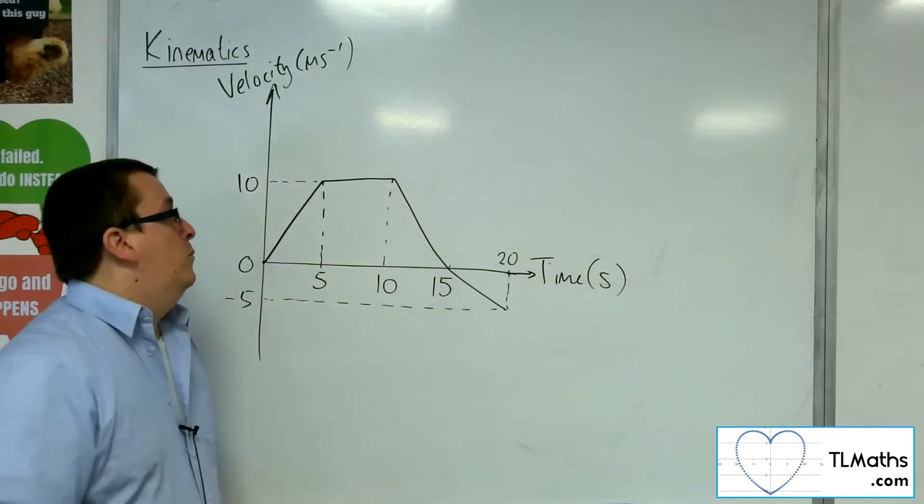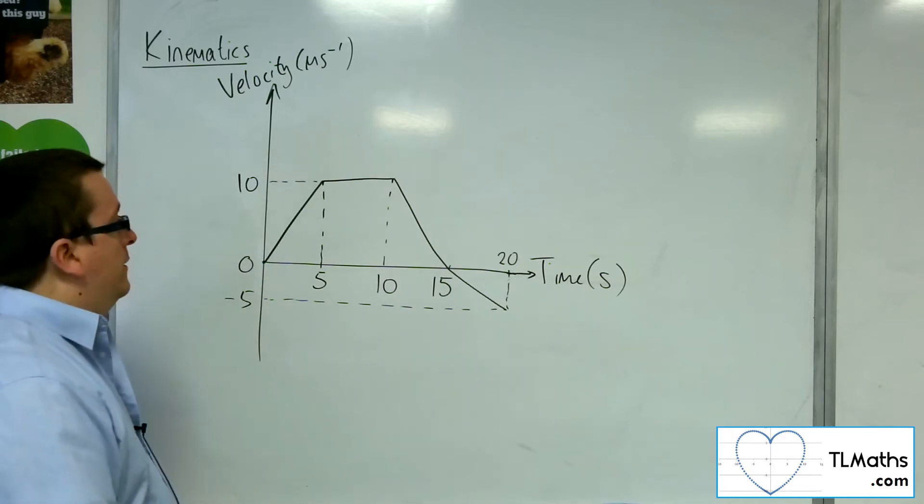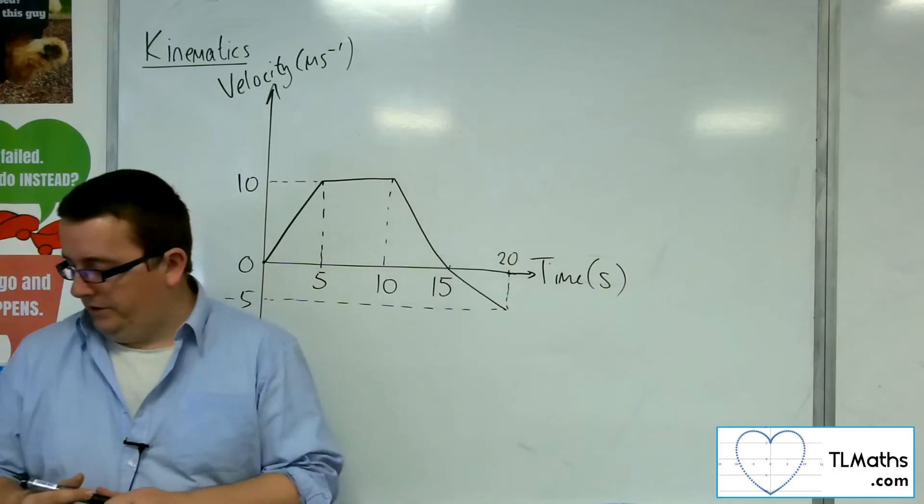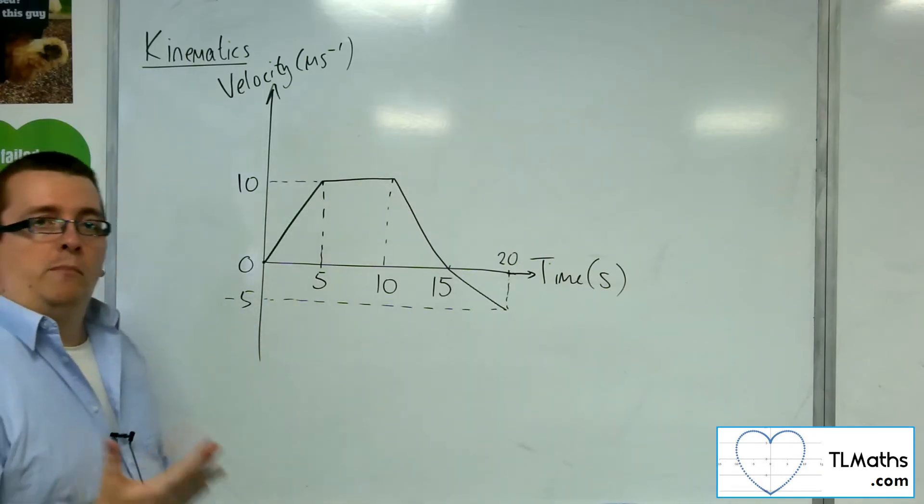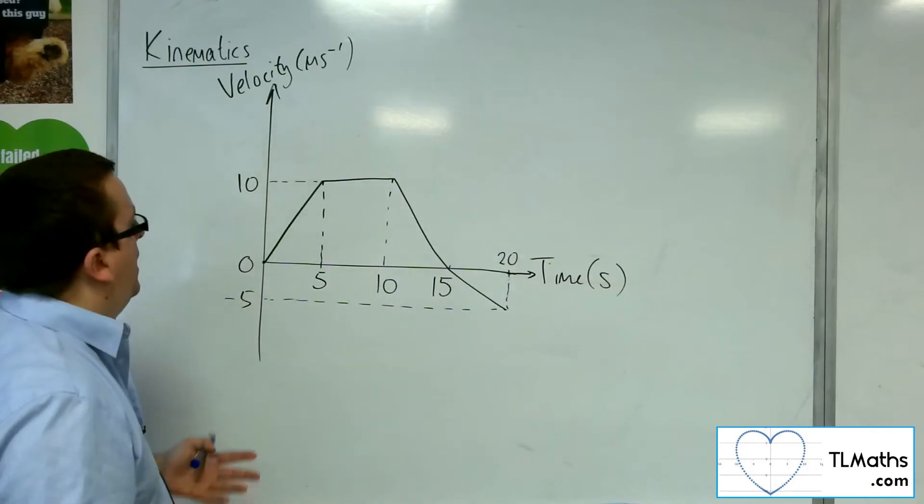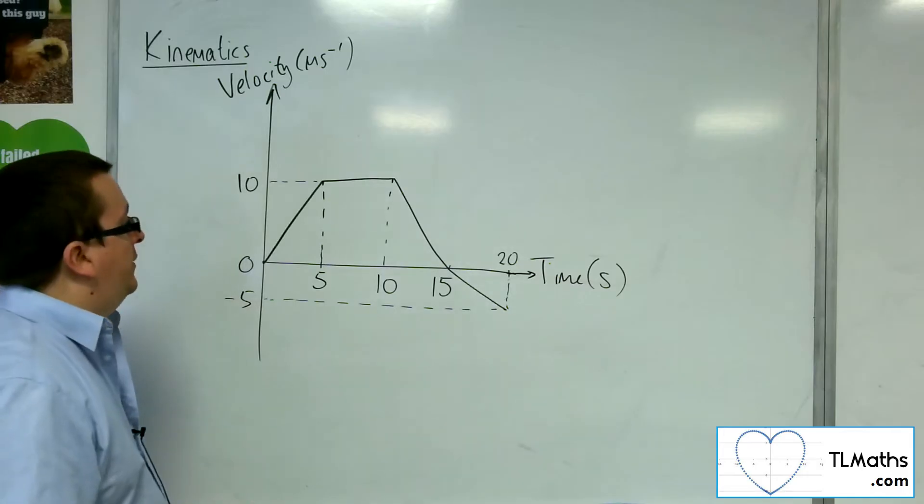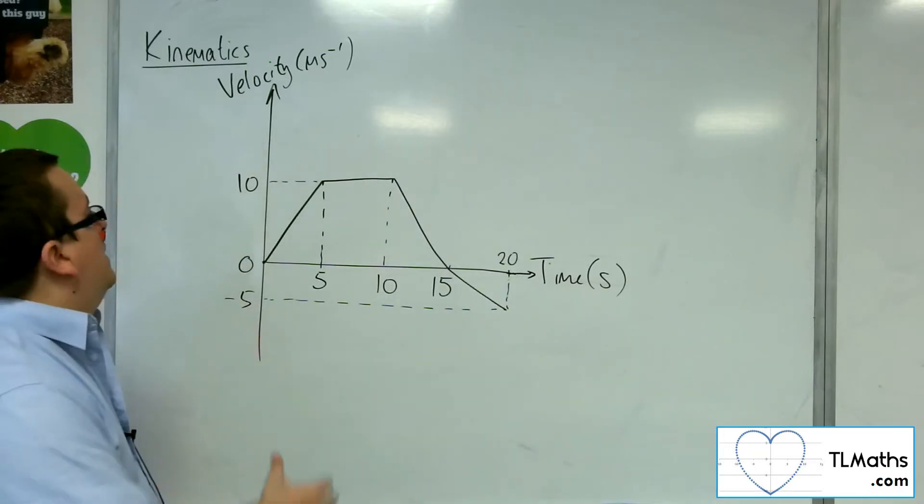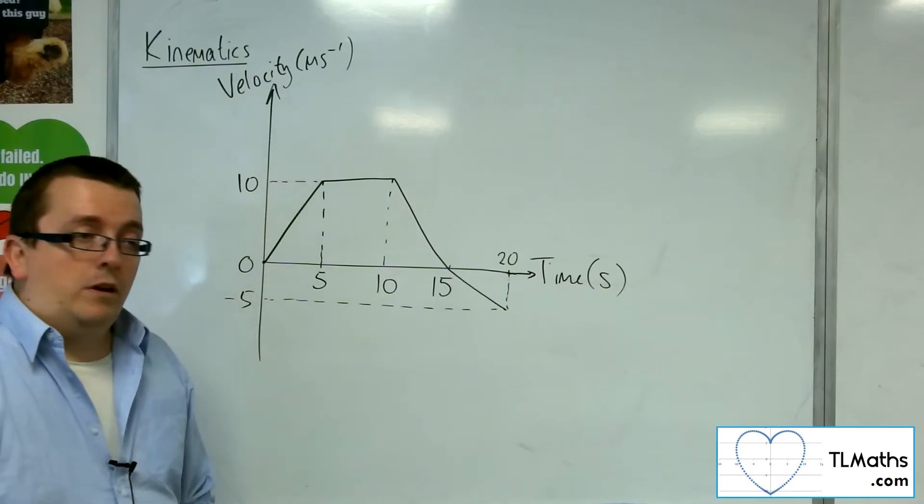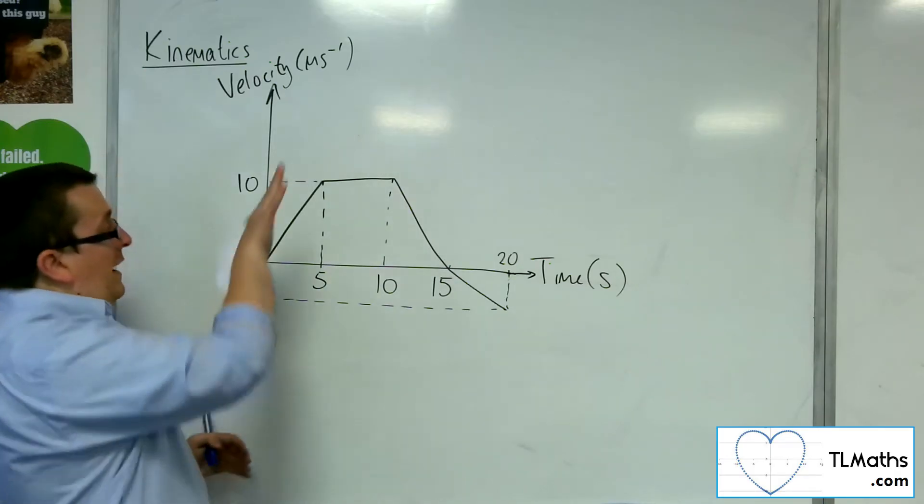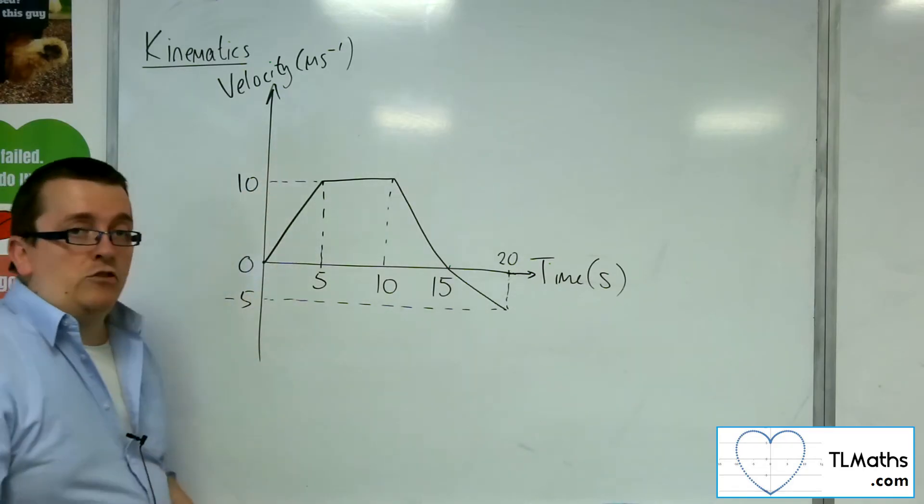Now, what can we decipher from this velocity time graph? What can we say about it? Well, as I was describing the particle's motion, I talked about the particle accelerating between zero and five seconds, up to 10 metres per second. So clearly, this positive gradient is representing the acceleration. The steepness of that will represent its acceleration. So the steeper the line, the faster it is accelerating.